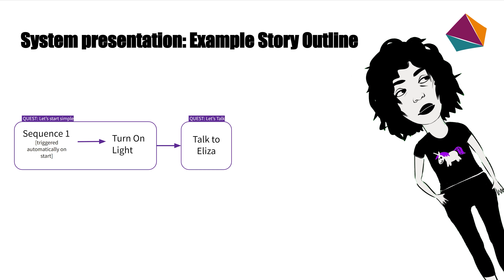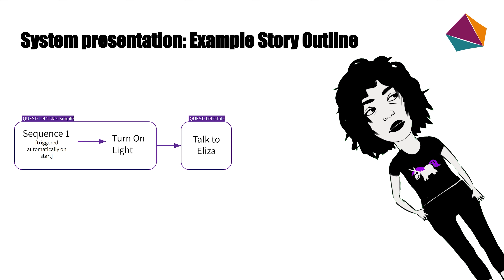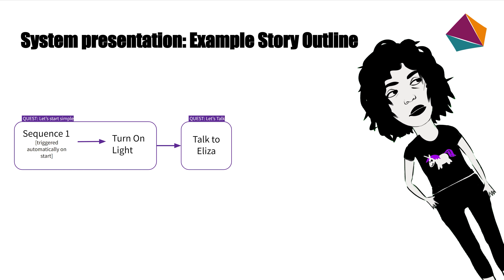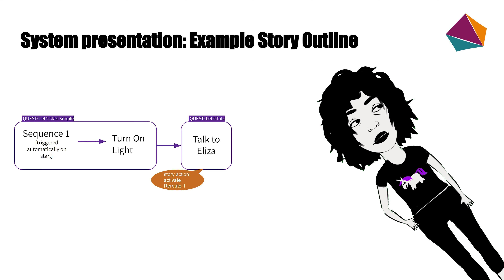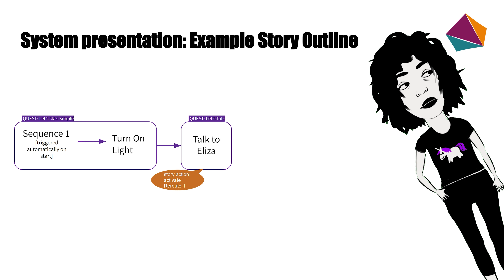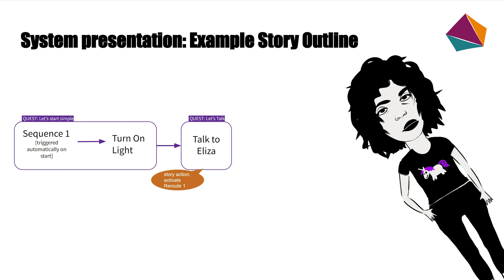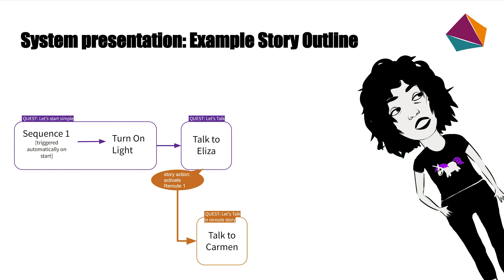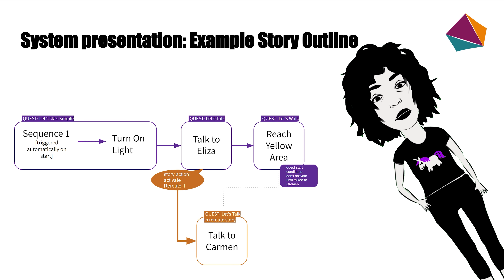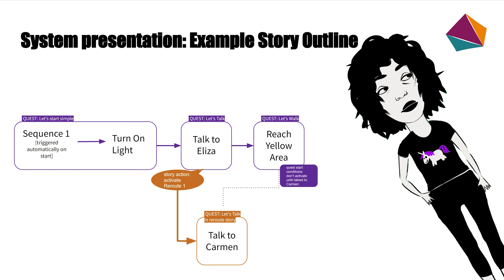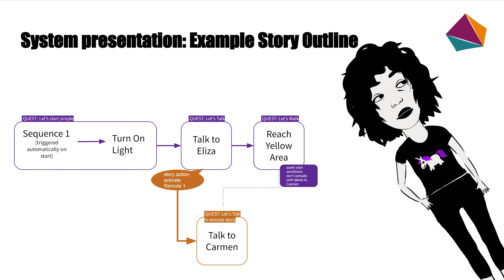When the sequence finishes, the next objective starts — it's called 'Turn on Light', the most basic objective. When you do that, the next quest of the main story line starts: 'Talk to Eliza'. This quest holds a story action inside, which means that whenever this dialogue finishes it activates a reroute line — a second story blueprint actor placed on the map. This reroute forces you to talk to Carmen and even pauses the main story, so you will not be able to progress until you talk to Carmen. The 'Reach Yellow Area' objective within the 'Let's Walk' quest contains a quest start condition that says: don't activate me until the player talks to Carmen.